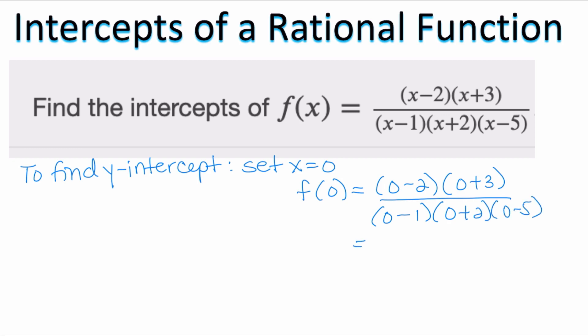So then I go ahead and I simplify here. 0 minus 2 is negative 2 times 3 over negative 1 times 2 times negative 5. We get negative 6 over positive 10 and this can be simplified to negative 3 over 5. So my y-intercept is the point 0 comma negative 3 over 5.